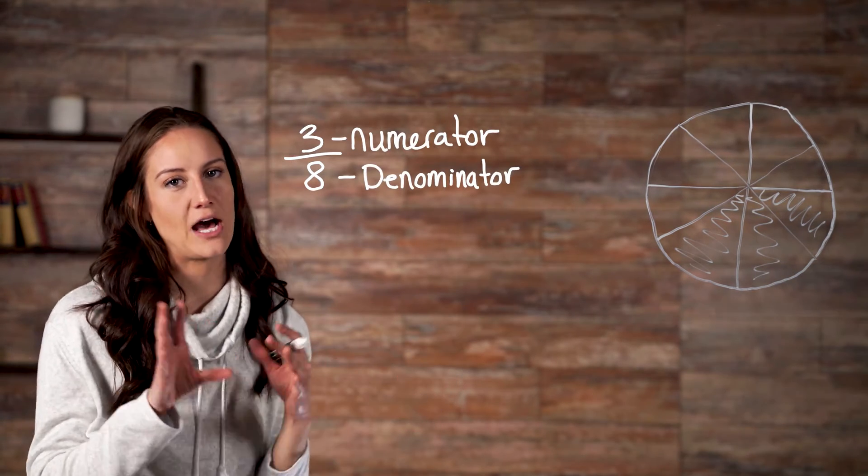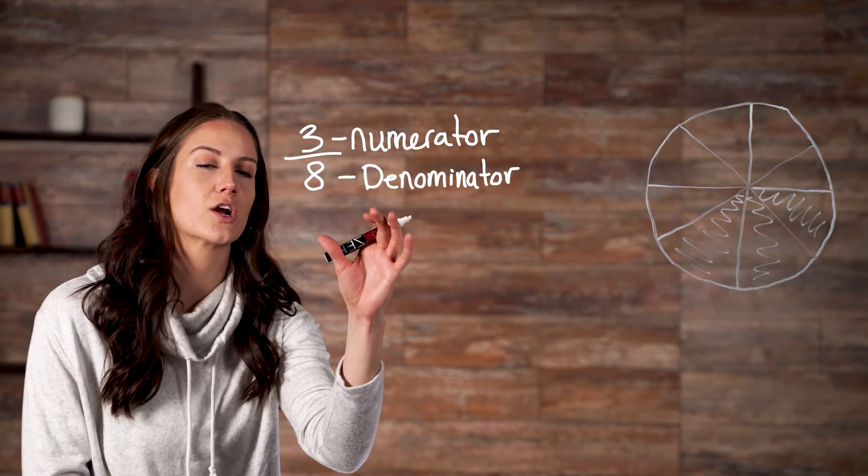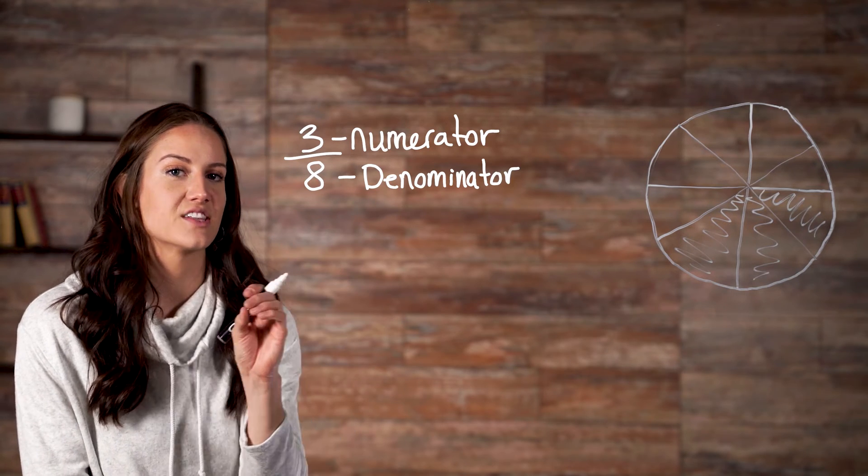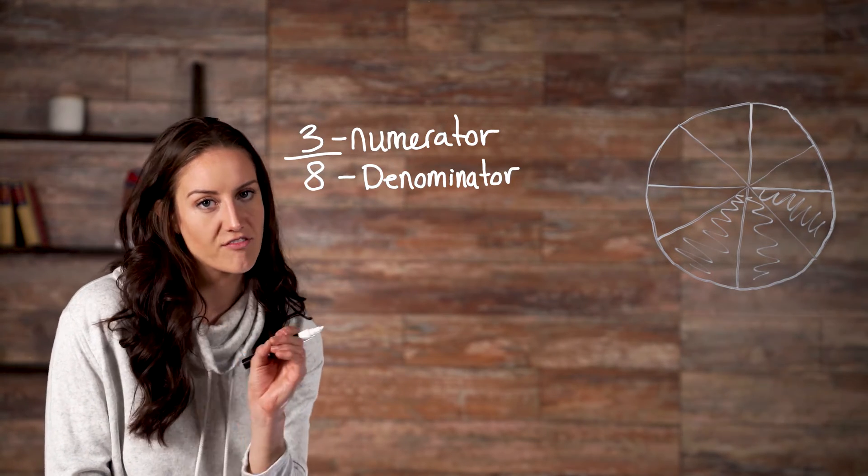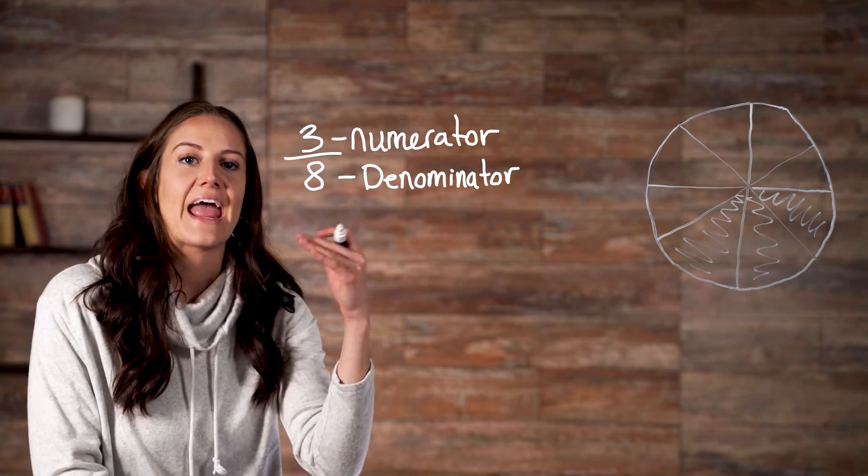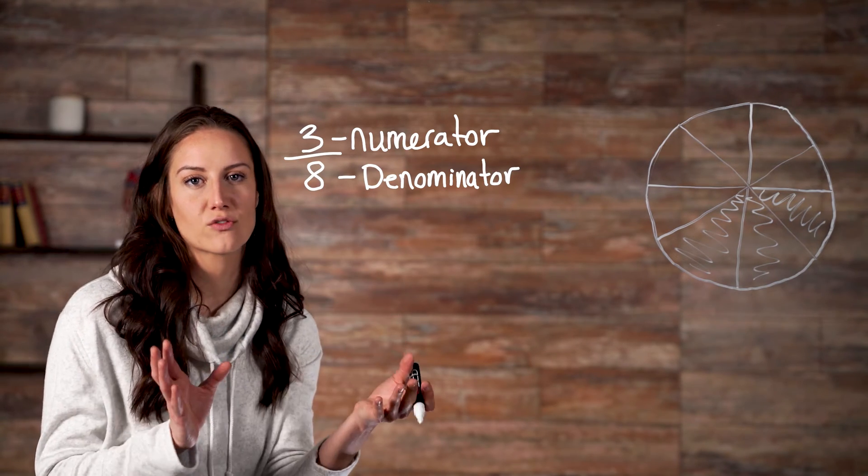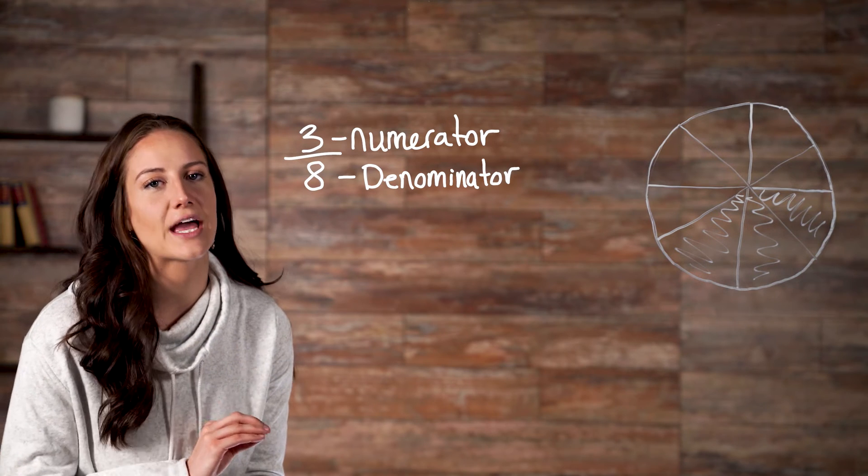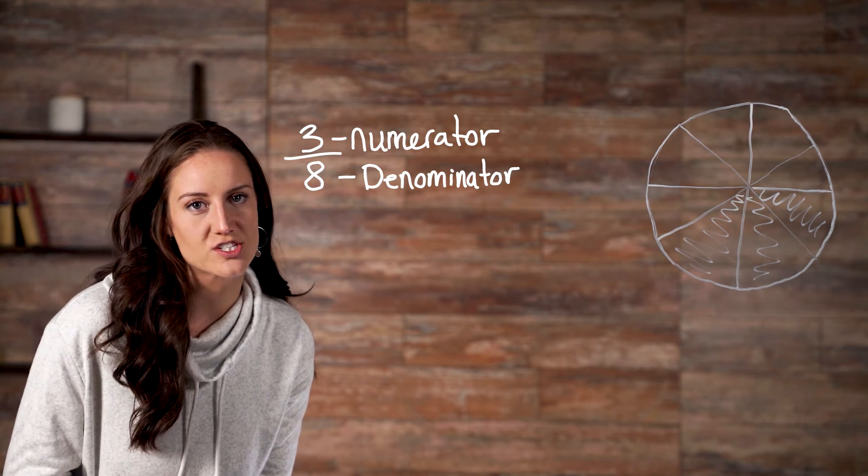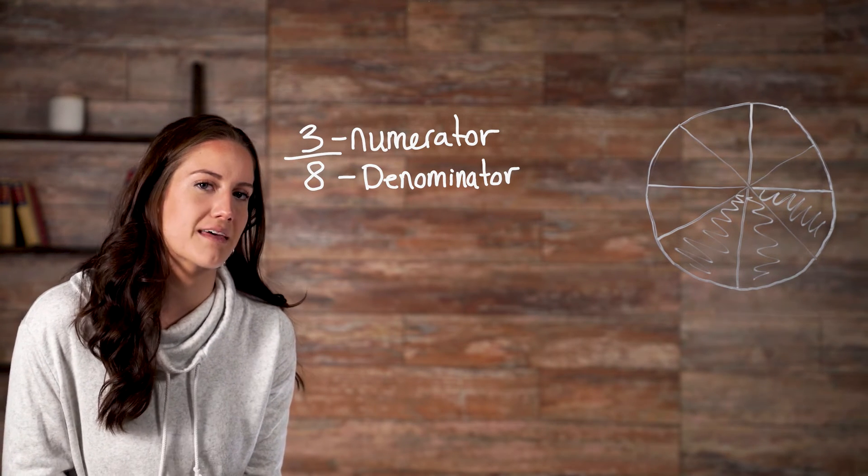When saying fractions out loud, the denominator will usually be spoken as the ordinal version of the number. You would say eighth instead of eight, or third instead of three. Let's take a look at a list of our denominators and see how we would say them.